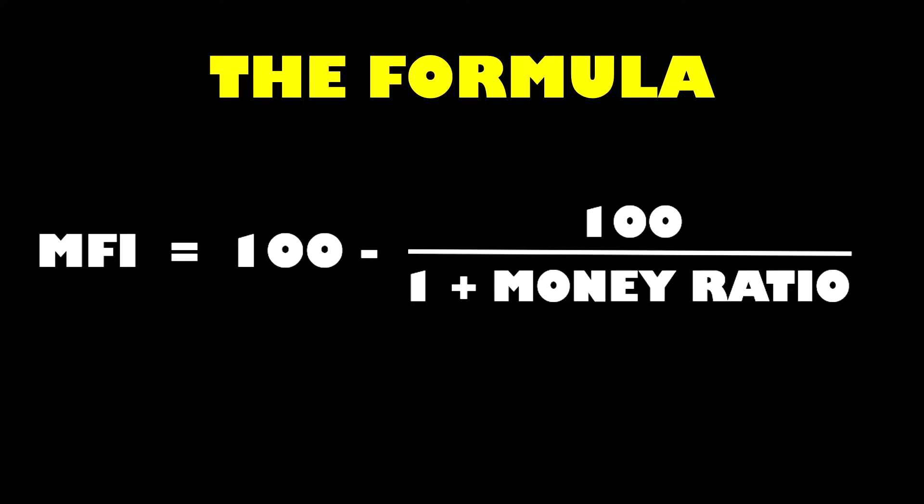If you are familiar with the RSI formula, you'll likely notice the similarities in how periods are counted together when price increased or decreased. The money ratio aspect of our formula just replaces the relative strength aspect of the RSI formula — hence both indicators use the 0 to 100 scale. The incorporation of volume just adds that extra kick to the MFI.